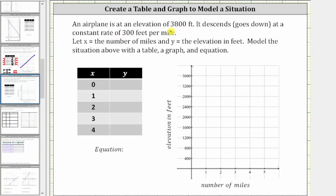An airplane is at an elevation of 3,800 feet. It descends or goes down at a constant rate of 300 feet per mile. Let x equal the number of miles and y equal the elevation in feet. Model the situation above with a table, graph, and equation.